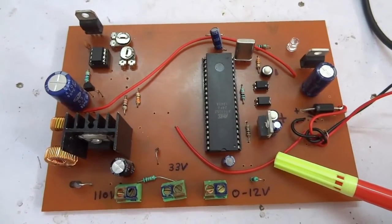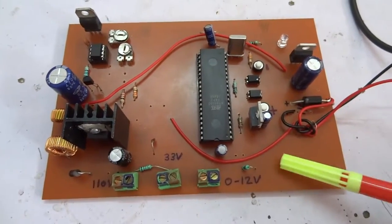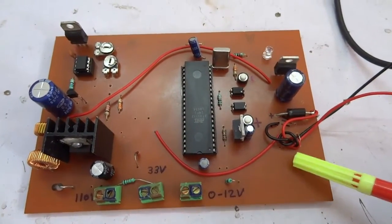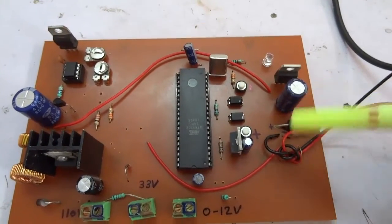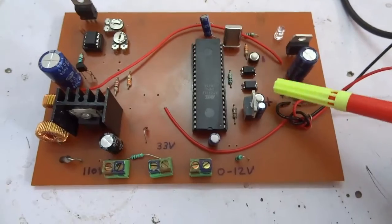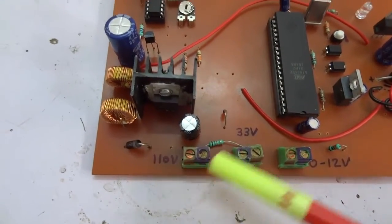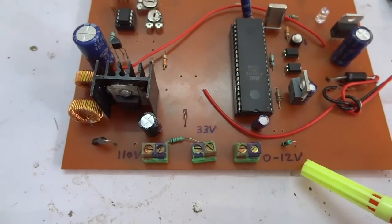This is a circuit of single input multiple output DC to DC converter. Here in the circuit we have given 12V input from battery and at the output of the circuit we get 110V, 33V and 0-12V.